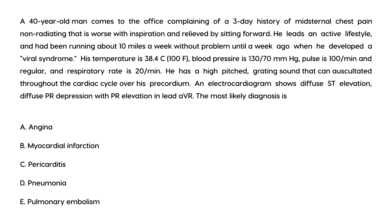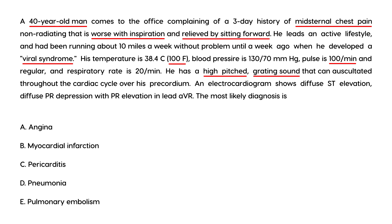Clinical vignette one: A 40-year-old man comes to the office complaining of a three-day history of mid-sternal chest pain, non-radiating, that is worse with inspiration and relieved by sitting forward. He developed a viral syndrome a week ago. Temperature is 100, blood pressure 130, pulse 100, respiratory rate 20. He has a high-pitched grating sound over his precordium, and an EKG shows ST elevation, PR depression, with PR elevation in lead AVR. The most likely diagnosis is pericarditis — all the classic clues are present.